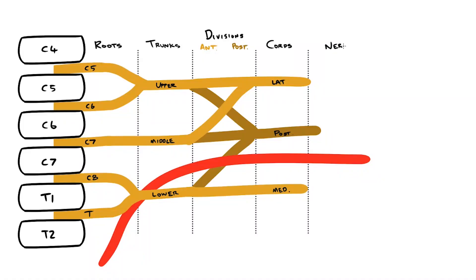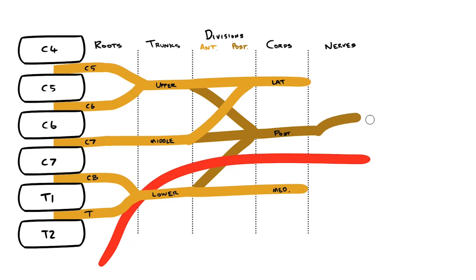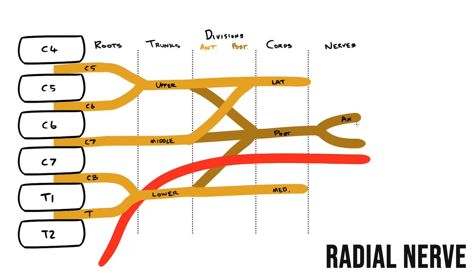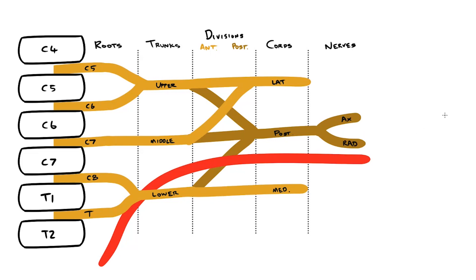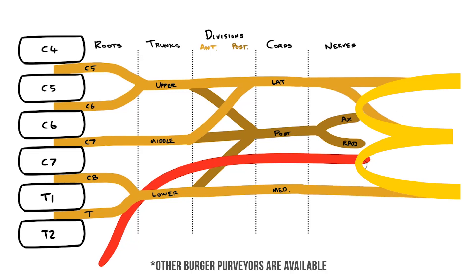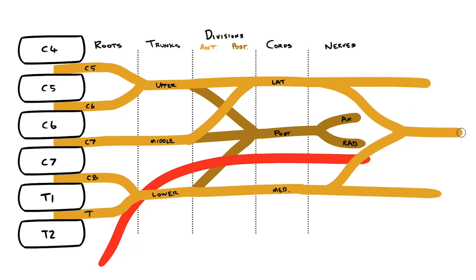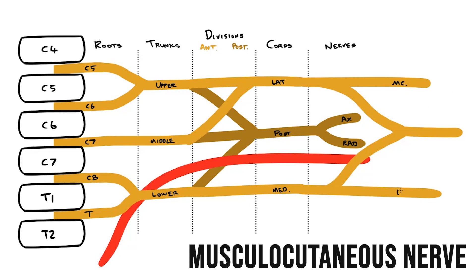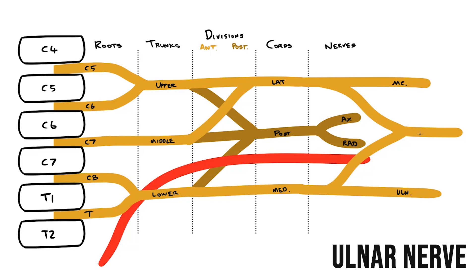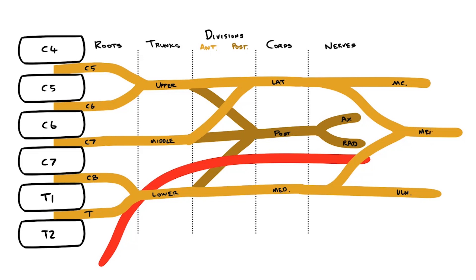Finally, these cords form the five major nerves of the upper limb. The posterior cord simply divides into the axillary and radial nerves. The lateral and medial cords, however, divide and come together to form this characteristic McDonald's M shape. As soon as you see this you are loving it, because you've now found the major anterior branches of the brachial plexus. Laterally we have the musculocutaneous nerve, medially the ulnar nerve, and between these is the median nerve.